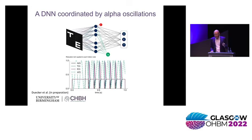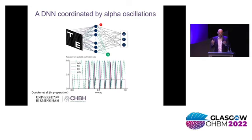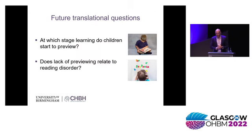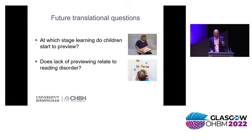This is still very early days and very primitive, so we want to extend this network with more layers so we can represent V1, V4, and IT and so forth, and do this with more complex stimuli. That's one development we want to do in the future. In terms of translation, we have plans to take what we learn about reading and apply that in children. What I mentioned before is that previewing seems to be very important for our ability to read and reading speed. So, what we want to ask is at what stage in development do children learn to do this previewing? And furthermore, can the lack of previewing explain why some children might have problems reading efficiently?